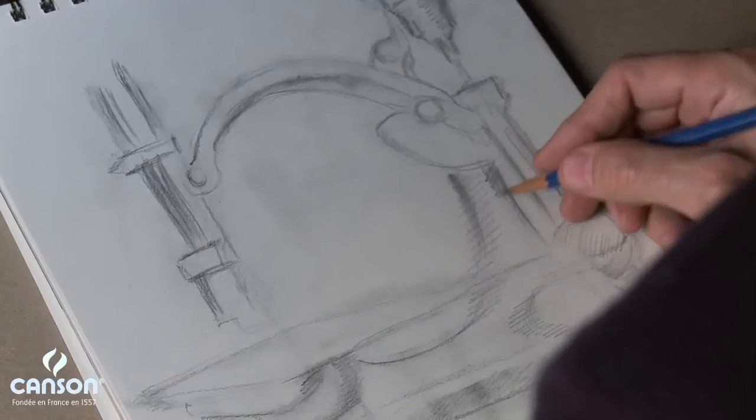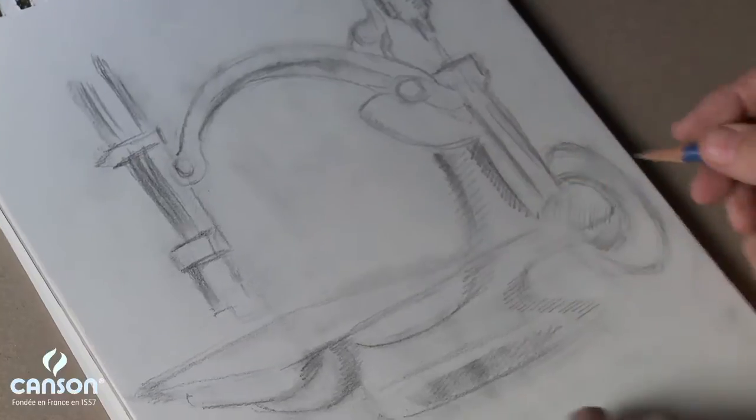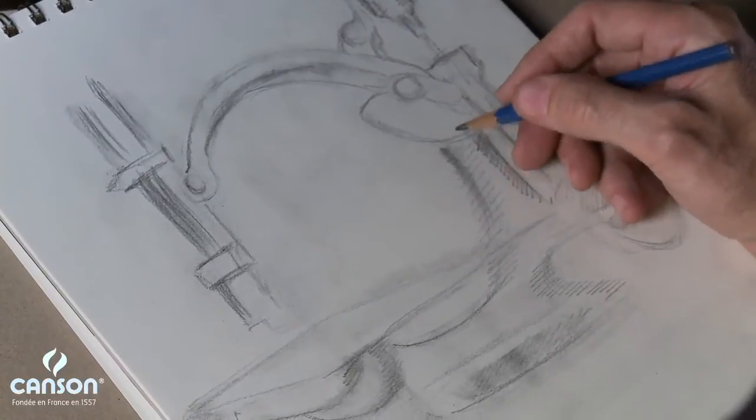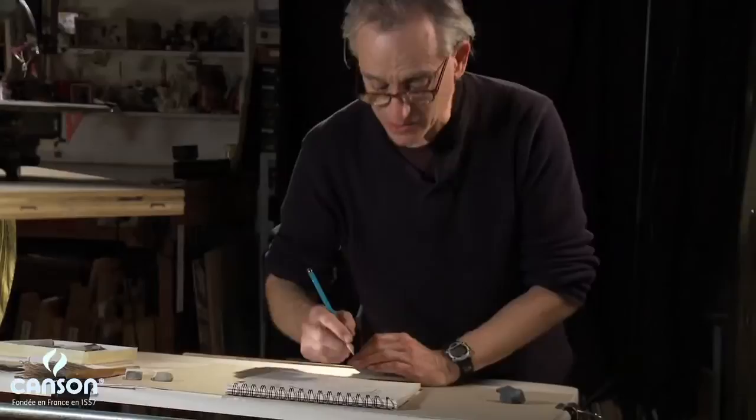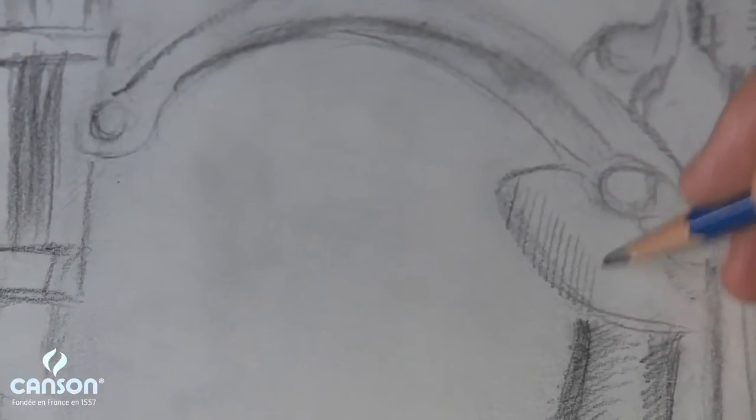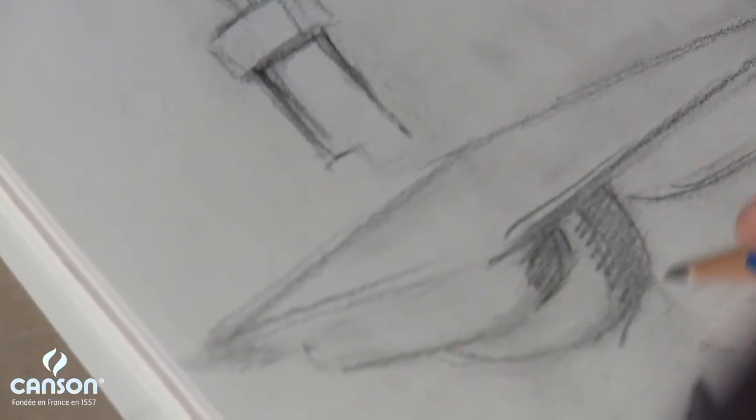Now the Canson drawing papers generally give good attention to erasability. So let's see if we can go back, strengthen some of the darks. I can get a fairly thin, fine, and very accurate line with the pencil on the paper. The texture isn't too deep for that.